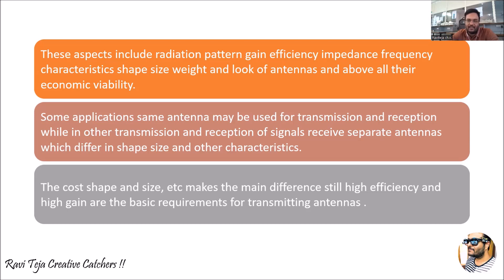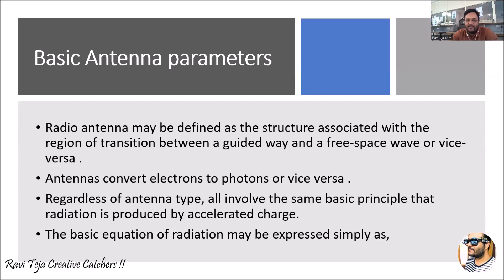These antennas will differ in shape, size, and characteristics. Cost, shape, and size make the main difference; along with that, high efficiency and high gain can also be considered as basic requirements of transmitting and receiving antennas. Coming to the basic antenna parameters: a radio antenna may be defined as a structure — it can be any kind of structure — associated with the region of transition between a guided wave and a free space wave, or vice versa.